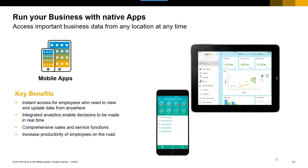Mobile applications are available out of the box — you can go to the Google Play Store or the Apple Store and download mobile applications that will work with your SAP Business One system today, assuming you're not on a really old version. If you are on HANA, HANA provides even more functionality that allows SAP to build more of these applications. If you're licensed for SAP Business One, you can start using them straight away.